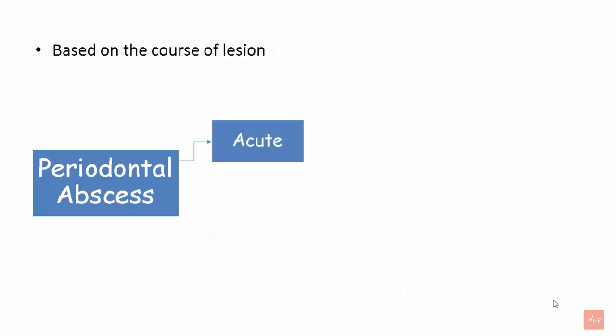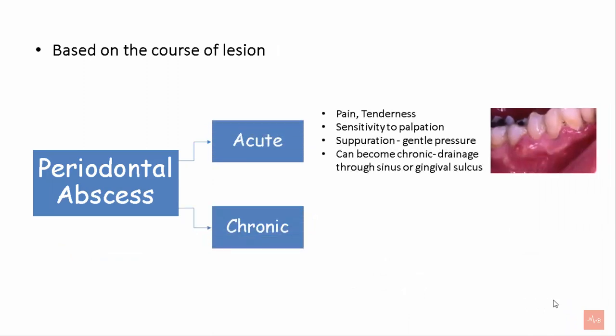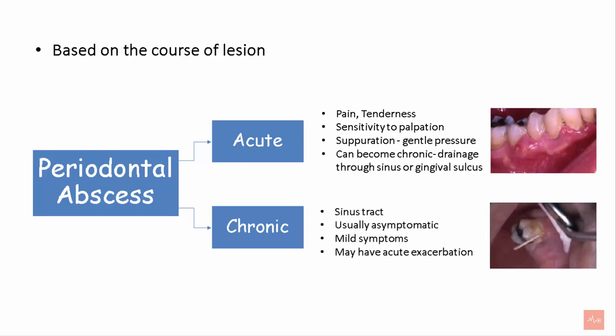Based on the course of lesions, periodontal abscesses can be classified as acute or chronic. Acute periodontal abscesses are painful and tender, sensitive to palpation, and show suppuration on gentle pressure. They can become chronic due to drainage through a sinus or gingival sulcus. Chronic periodontal abscesses are generally associated with a sinus tract, which can be traced using a gutta-percha point.